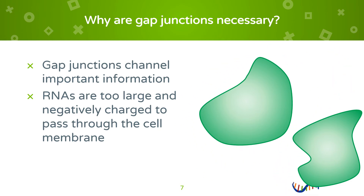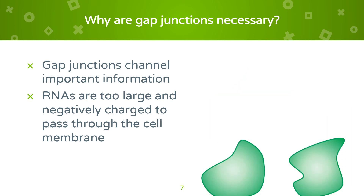The membrane of the cell makes it difficult for a molecule to be easily taken in because the negative charge of the membrane repels the negative charge of the nucleic acid. The strong barrier that the cell membrane creates makes it hard for large particles like RNA to pass through. The gap junction solves this problem.